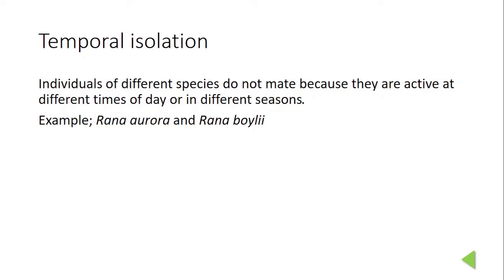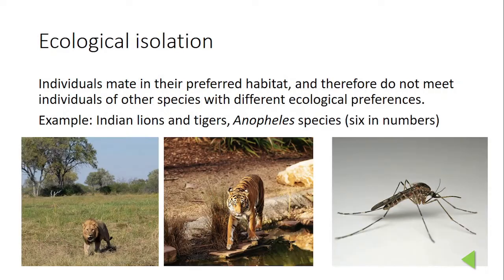In temporal isolation, due to the difference in their time of activity, mating does not occur. For example, Rana aurora and Rana boylei are two frog species that inhabit the same area, but the breeding season for Rana aurora ranges from January to March, whereas for Rana boylei it ranges from March to May.